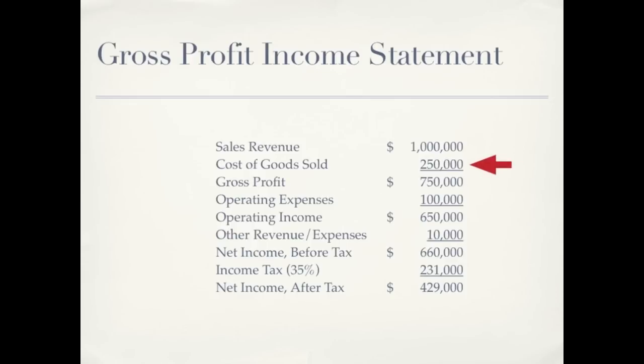We subtract cost of goods sold from sales revenue to derive what is called gross profit. Gross profit is then used to cover any operating expenses and the income that we hope to have left.